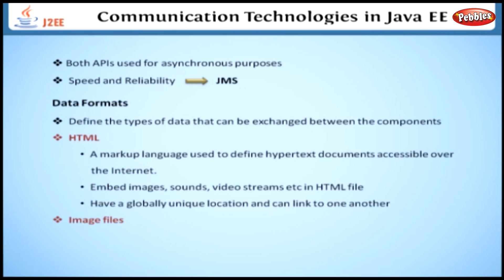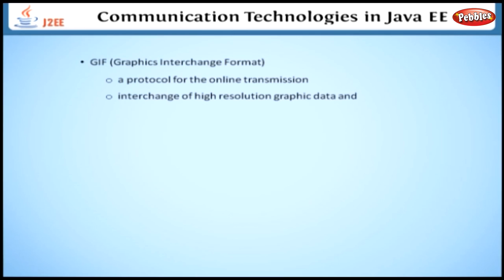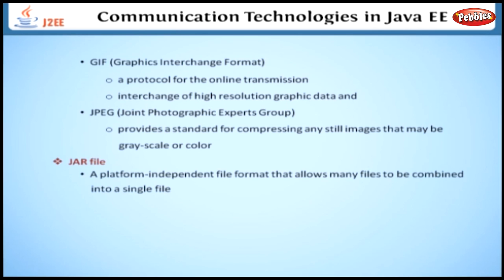The Java EE platform supports two formats for image files: GIF — Protocol for the online transmission and interchange of high-resolution graphic data — and JPEG — Joint Photographic Experts Group — which provides a standard for compressing any still image that may be grayscale or colour. There is also a platform-independent file format that allows many files to be combined into a single file.